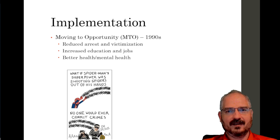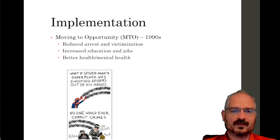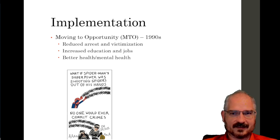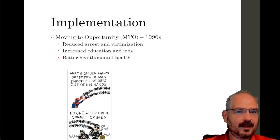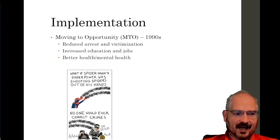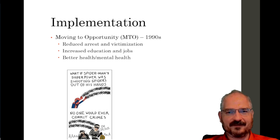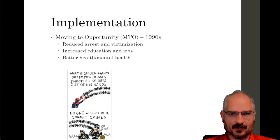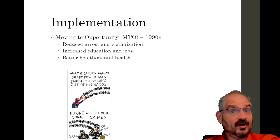The problem with the Moving to Opportunity findings is that lots of other factors change when you move neighborhoods, and lots of other theories would also predict these benefits — not just social disorganization. Learning theory might predict the same outcome; strain theory might predict the same outcome. So these benefits aren't necessarily proof that social disorganization is the best or even a good explanation for crime.